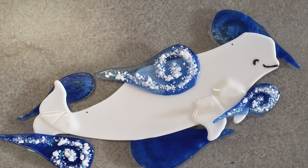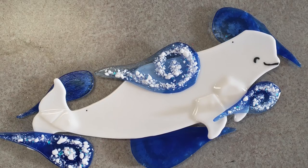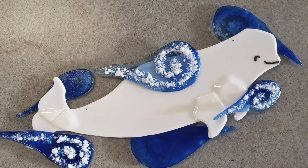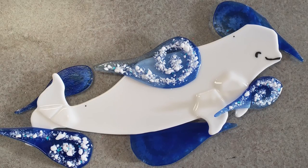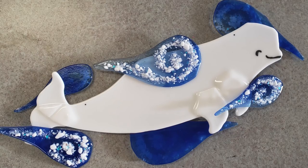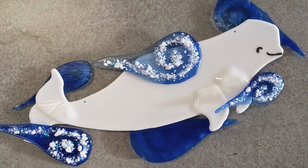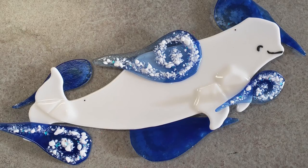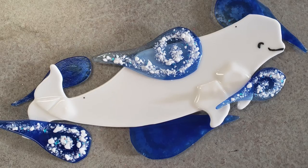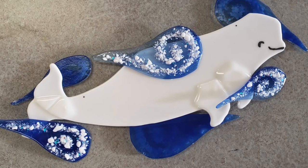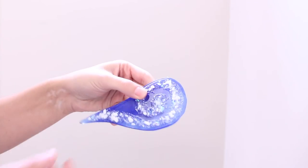Once all your pieces are finished fusing, then you can start drilling your holes. You want to be thoughtful with where you drill the holes because depending on how the glass is balanced, it's going to hang a certain way depending on where you have that hole. For the whale I knew I would need two holes, one closer to the head and one closer to the tail to make it balanced and look like it's swimming through the water.